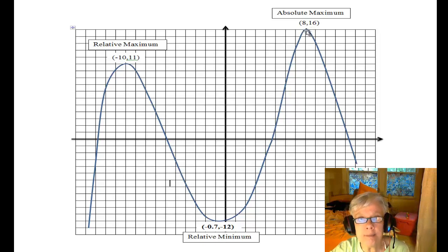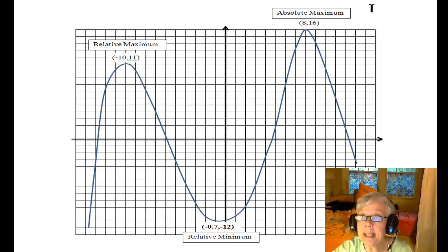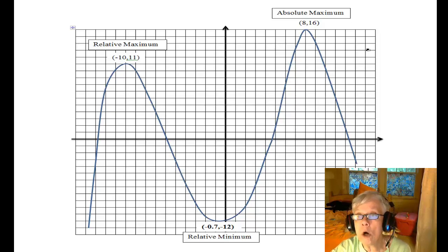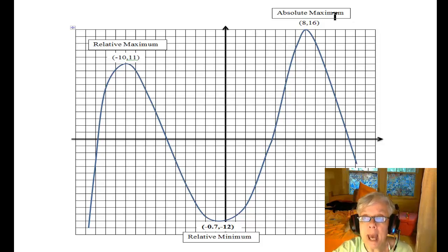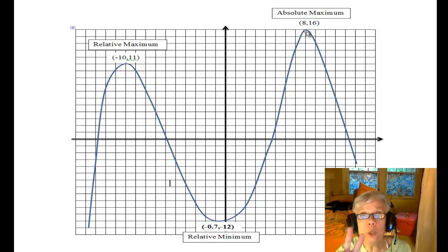816 is definitely the highest point on the graph. These legs of the graph will continue to go down forever and ever — they're never going to turn around and come back up. It's enough to say that yes, this is a relative maximum because in its own neighborhood it's the highest point, but it's also the very highest point on the whole graph. So the absolute maximum is 16 and it occurs at x equals 8. So we have a relative maximum here and we also have an absolute maximum — we have two maxima.